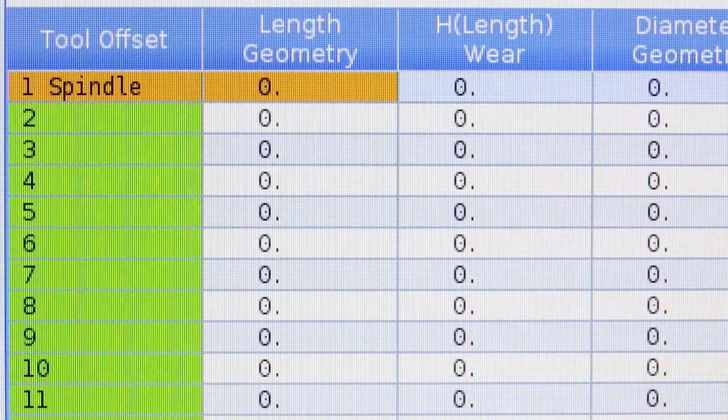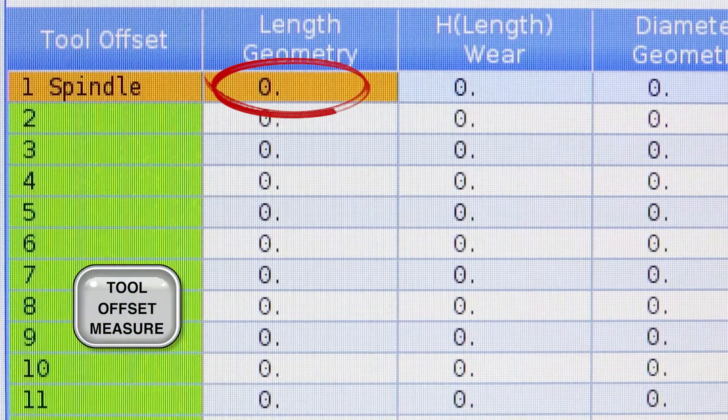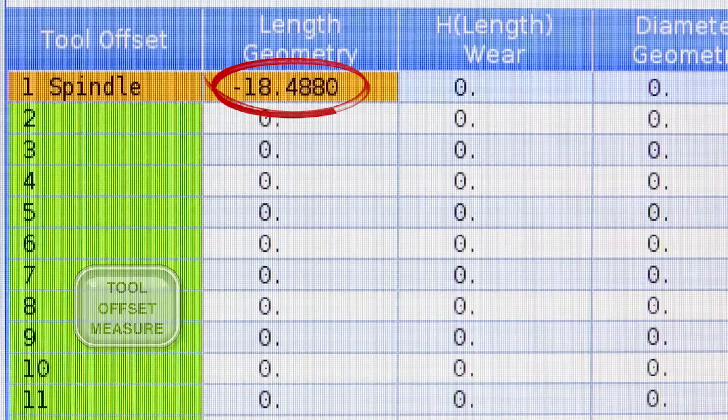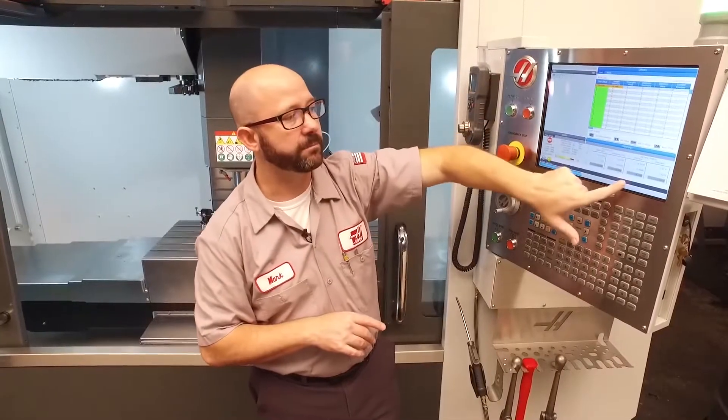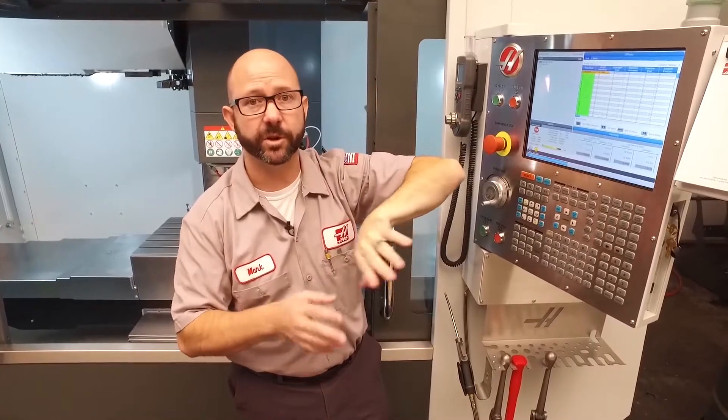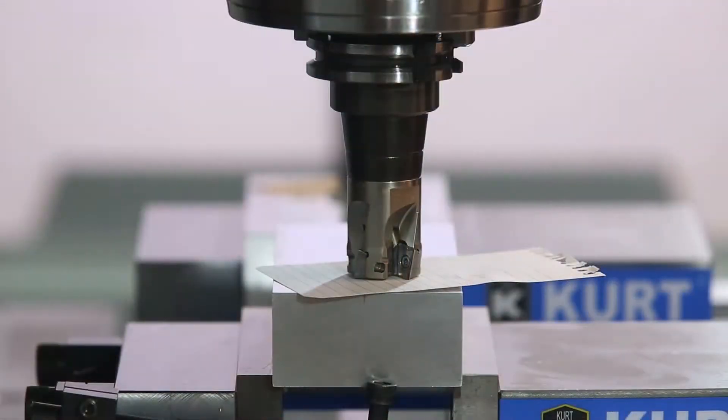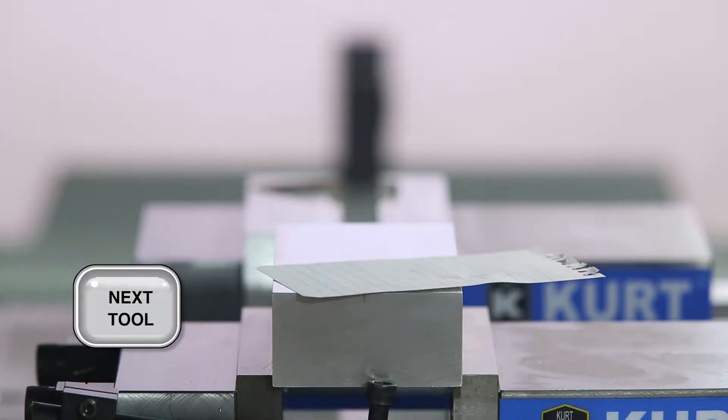I'm going to go to my tool offset page. With tool offset one highlighted, I'm going to press the tool offset measure key, minus 18.488. That's my machine position. That's what it's using for its tool offset. We'll talk about that later. I'm going to close my door and I'm going to press the next tool. We're going to repeat this process for all of our tools.